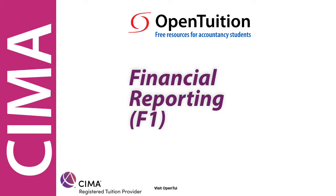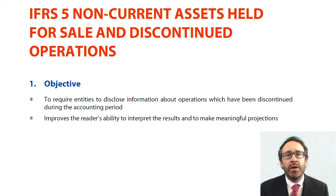This is a lecture from OpenTuition. To benefit from the lecture, you should download the free lecture notes from OpenTuition.com. This chapter is all about IFRS 5 and it covers another area of property, plant and equipment, looking at non-current assets held for sale and discontinued operations.